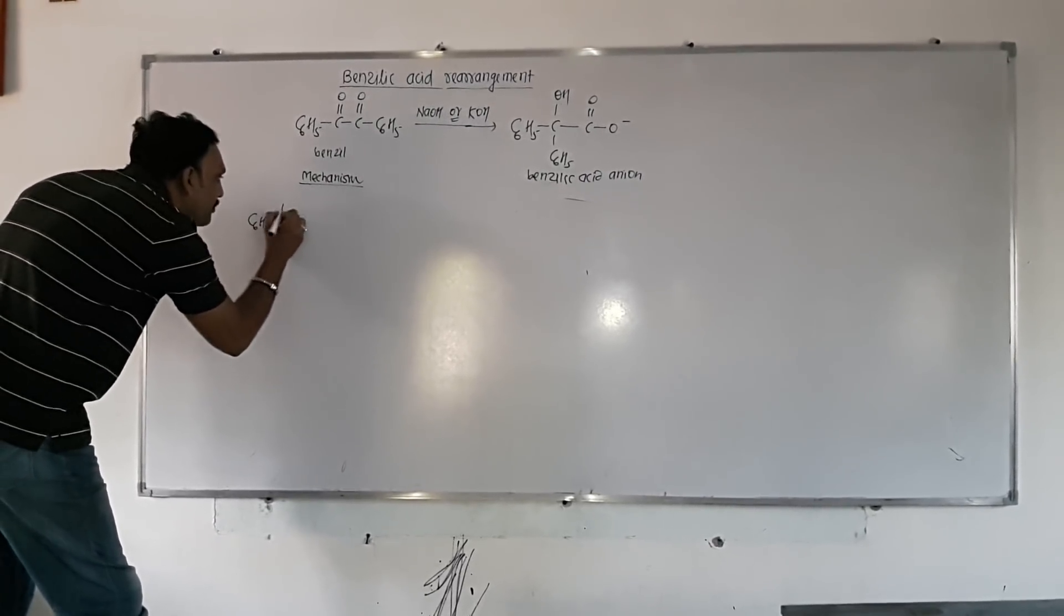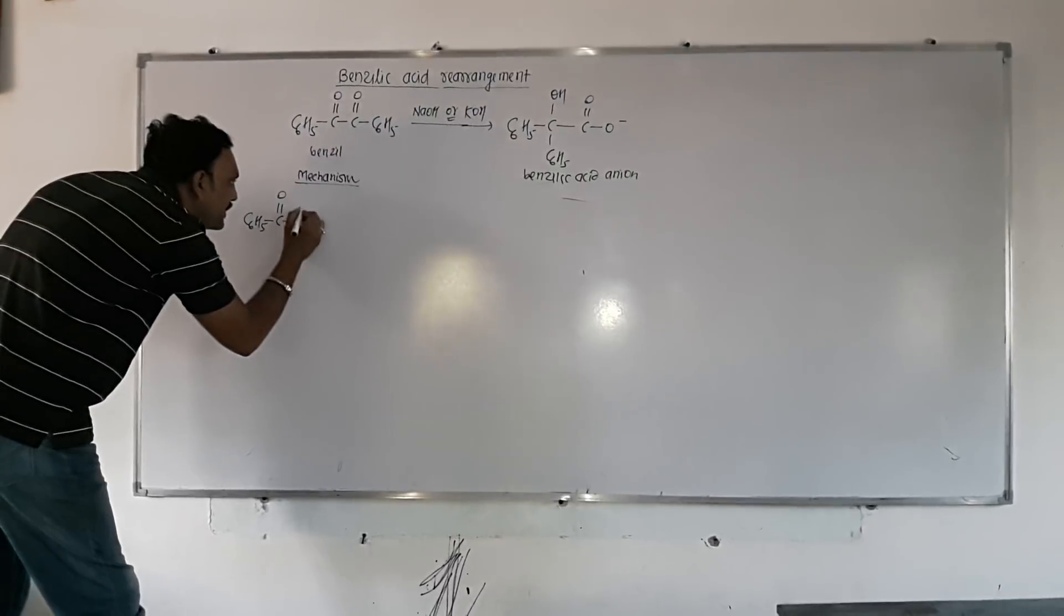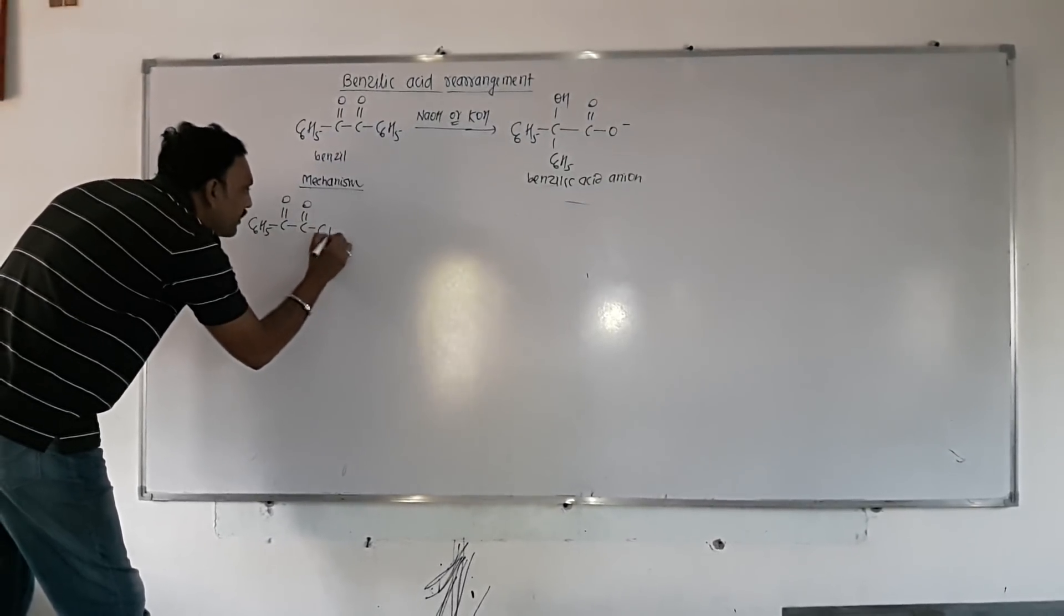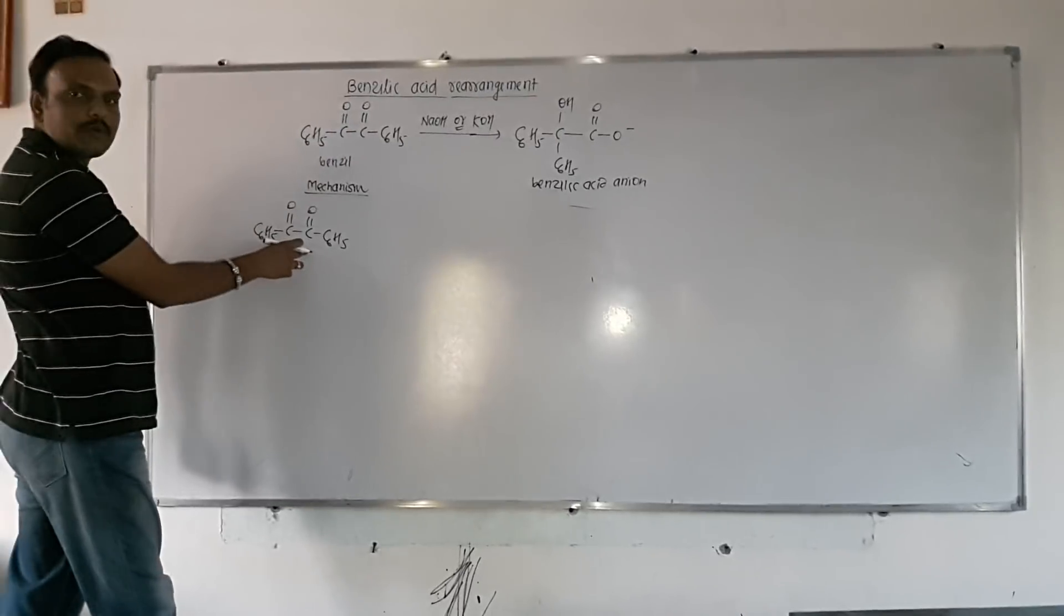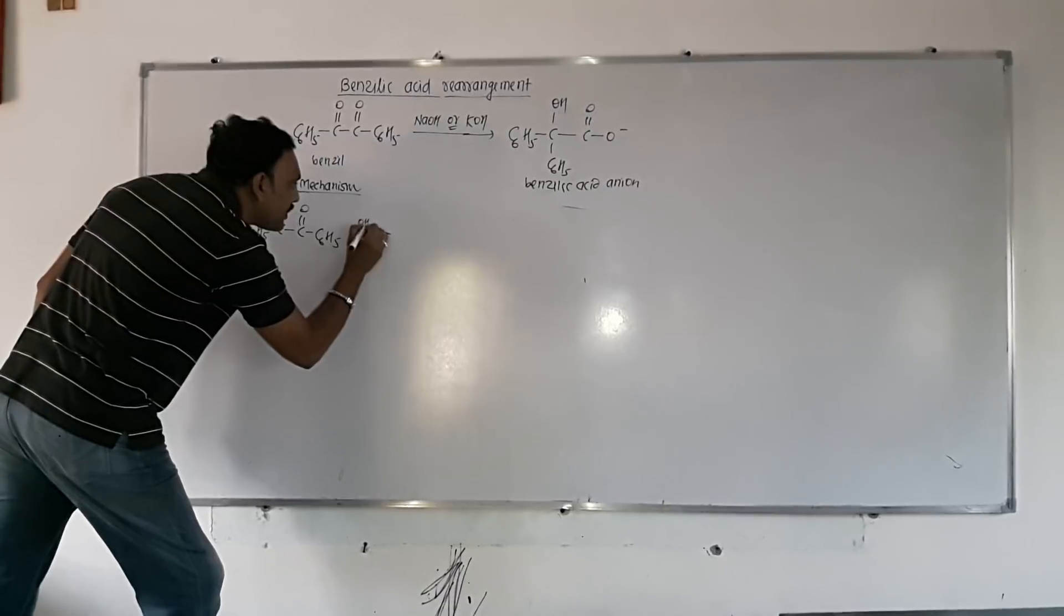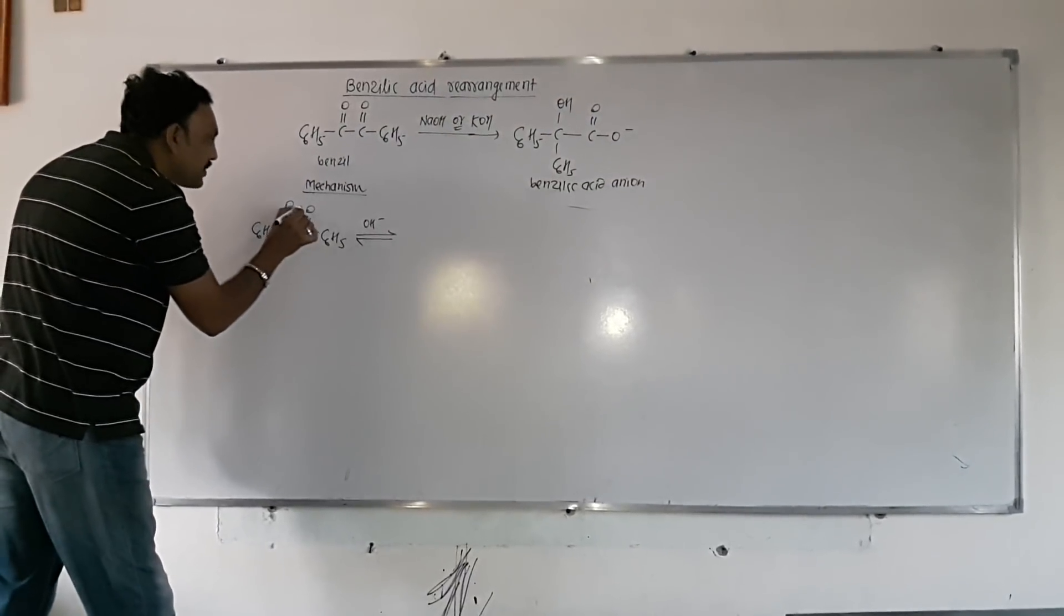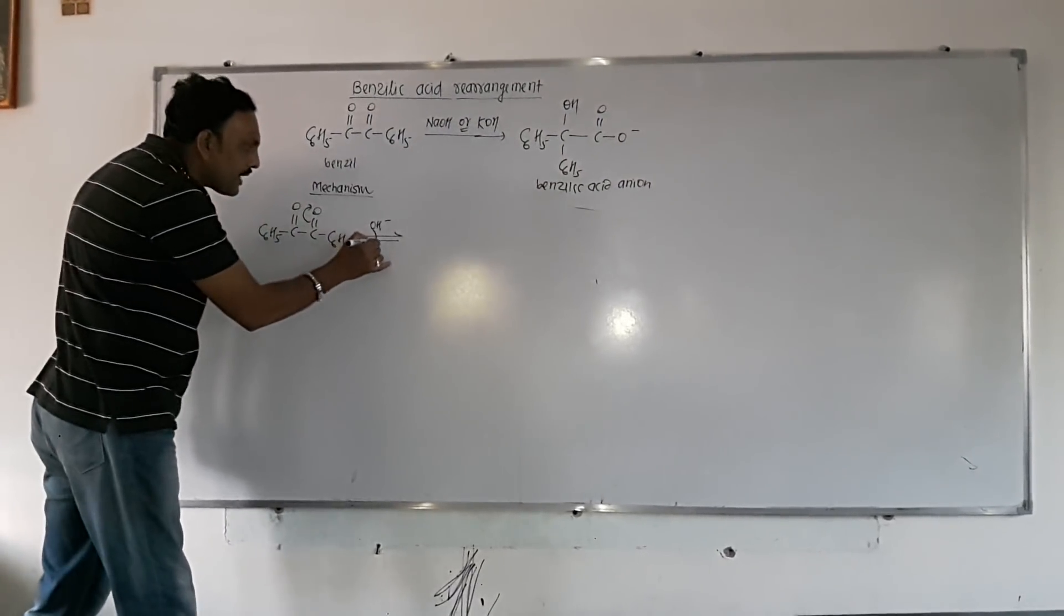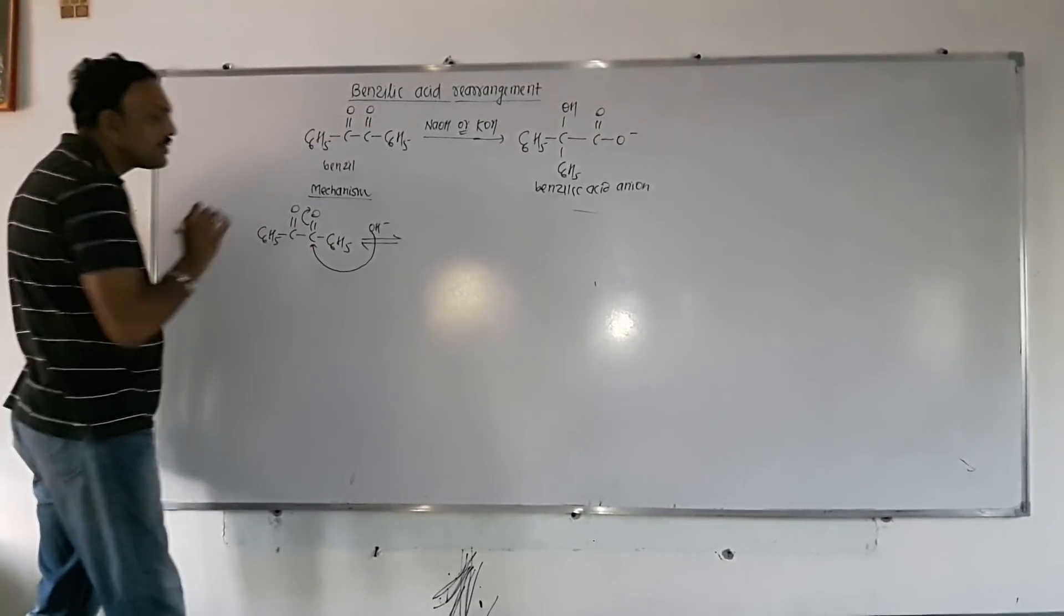In the very first step, look at this, this is benzil. There are two ketone groups in case of benzil. So, the very first step is a reversible step, in which nucleophiles tend to attack at this carbon, which is ready to accept nucleophilic attack.